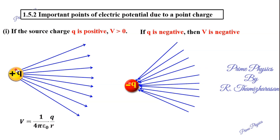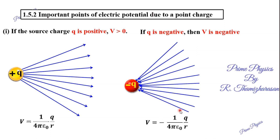In this video, there is one positive point charge in the electric field. What is the potential value? V is greater than zero. For a positive charge, the potential value is greater than zero — it is a positive value. For a negative source charge, V is negative. This is the first point.